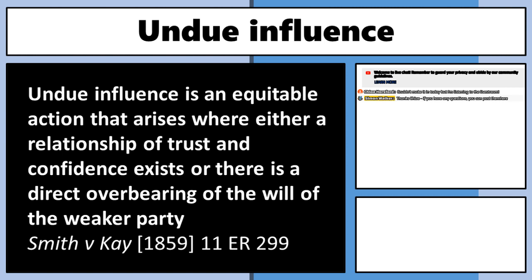There's a section — the Powers of Attorney Act section 87 — which says undue influence automatically arises. That's a statutory rule. But in terms of contract law, undue influence will arise where there is a relationship of trust and confidence — that's the most common one — or where there's no special relationship but somebody's will is overborne.